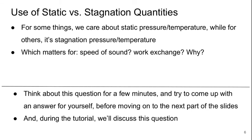Now, I want to take a quick step back here and think about static versus stagnation quantities and how we know which one matters. For some things we seem to care about the static pressure or temperature, while for others it's the stagnation pressure and temperature that we care about. Let's think about two examples: what matters for the speed of sound and what matters for work exchange, and why? Think about this question for a few minutes and try to come up with an answer for yourself before moving on to the next part of the video.